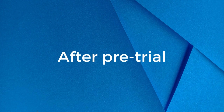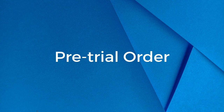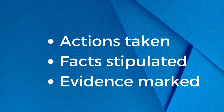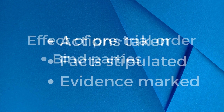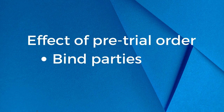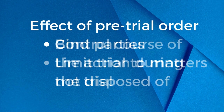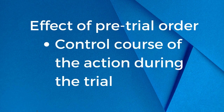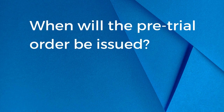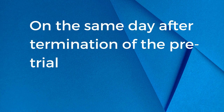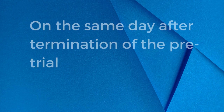What should the court do after the pre-trial proceedings are terminated? The court must issue a pre-trial order reciting the actions taken, the facts stipulated, and the evidence marked. What is the effect of the pre-trial order? Such order shall bind the parties, limit the trial to matters not disposed of, and control the course of the action during the trial, unless modified by the court to prevent manifest injustice. When will the court issue the pre-trial order? It shall be immediately issued and served upon the parties and counsel on the same day after the termination of the pre-trial.